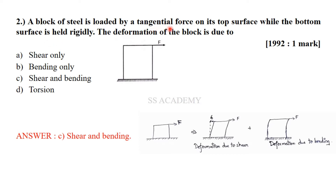A block of steel is loaded by a tangential force on its top surface while the bottom surface is held rigidly. The question asks what causes the deformation. When a tangential force is applied, there is a slight deflection of perpendicular linear elements — this is shearing. There is also a slight bending of the section. So both shear and bending cause deformation, making option C the correct answer.